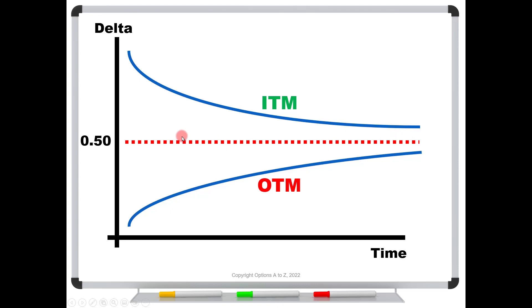So notice what's happening. If these options are getting pushed towards a delta of a half, that's your out the money option. And that means in this direction for your out of the money options that your gamma is increasing.